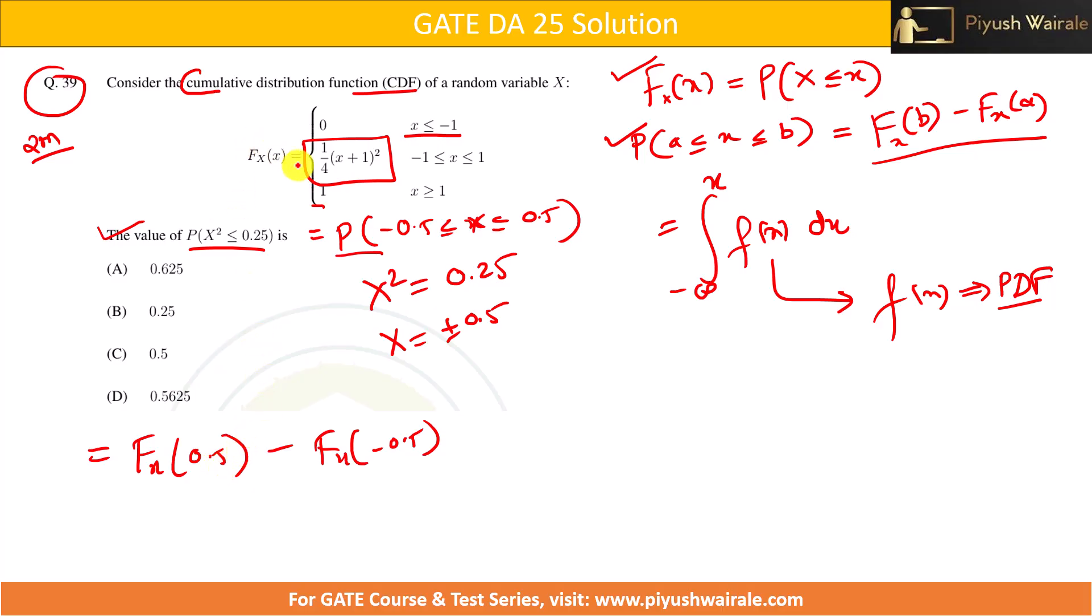When the value of function is 0.5 and -0.5, it means we have to use this particular function here. You can see the range. For 0.5 also and for -0.5 also, same function we have to use. So you can see here 1/4(0.5 + 1)² minus 1/4(-0.5 + 1)².